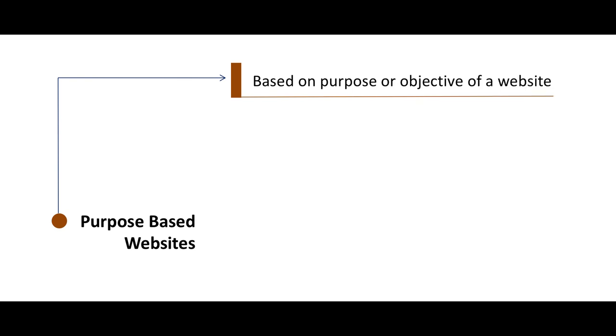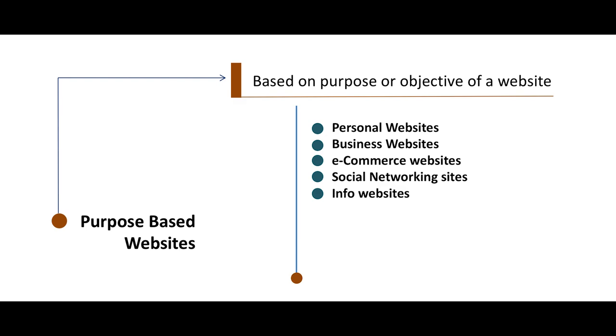Welcome back. We are discussing various types of websites. In the last video, I discussed various types of websites on the basis of performance, and in this video we will talk about various types of websites on the basis of purpose. Purpose-based websites are classified on the basis of the objective for which a website is designed. Various types include personal websites, business websites, e-commerce websites, social networking sites, and info websites. Info websites can further be classified into blog, forum, wiki, answer, and web directories.